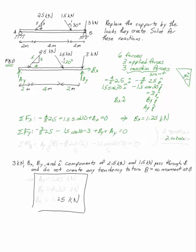The second equation that I need comes from the sum of the moments, and I have to pick a specific point there to figure out what moment I'm going to take it about. I'm going to pick point b because it eliminates so many forces. The three kilonewton load bx, by, and the i components of these two applied loads pass through b and are not going to create a tendency to turn b. There's no moment due to any of those components.